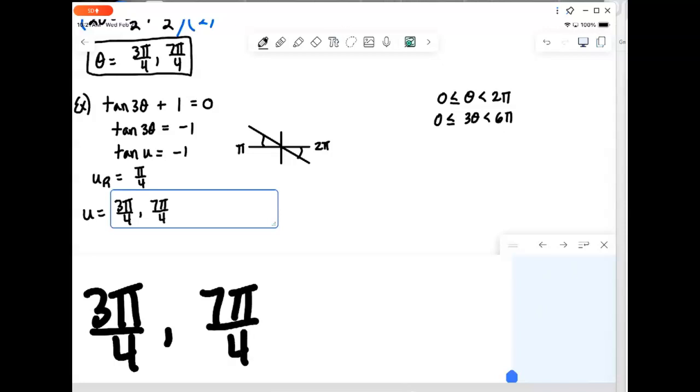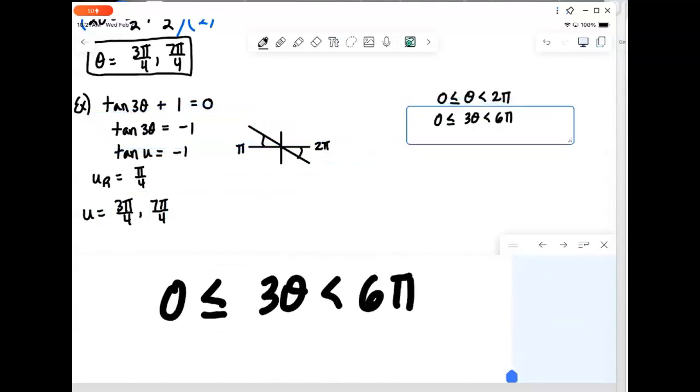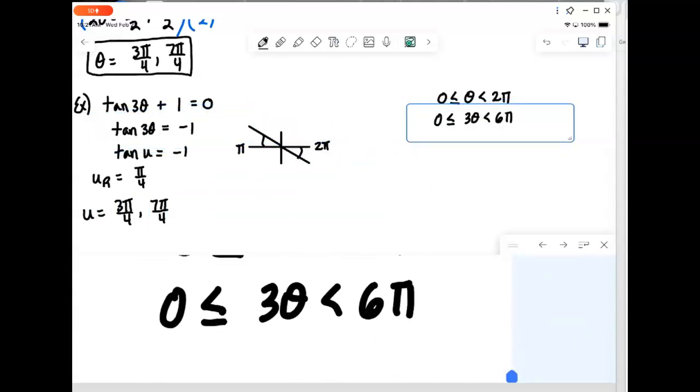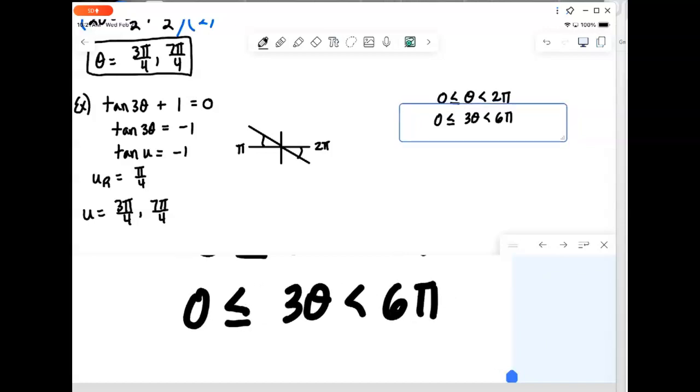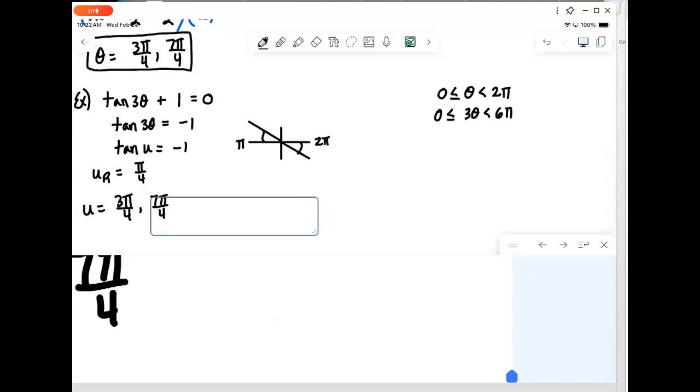And in the fourth quadrant, it would be 2 pi minus pi over 4 would be 7 pi over 4. And then, what we have to do, though, for theta, is we have to continue finding answers. So, we need to go three full turns around the circle. So, we found one turn around the circle, 3 pi and 7 pi. So, we do that. We add on 2 pi.